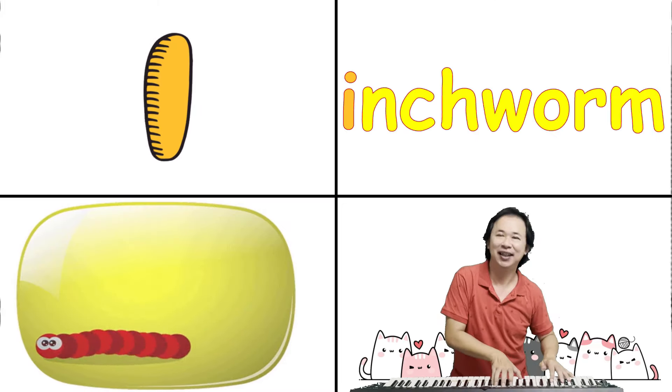O is for Ostrich, ah, ah, ah. P is for Peacock, p, p, p.